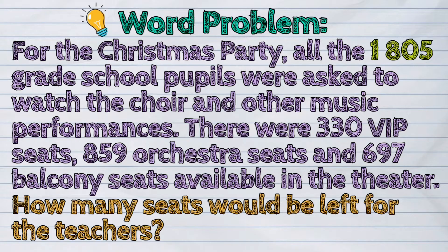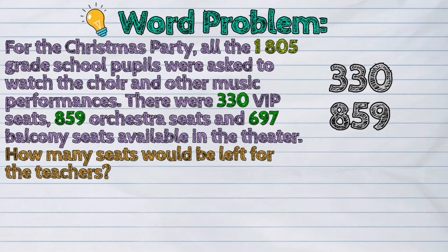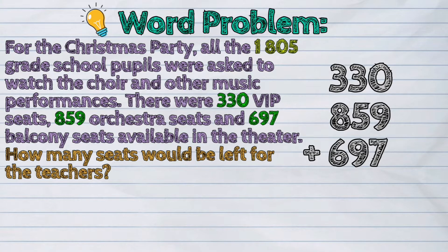Step one in solving this word problem is: we need to add up all the seats in the theater. We have 330 VIP seats plus 859 orchestra seats plus 697 balcony seats.